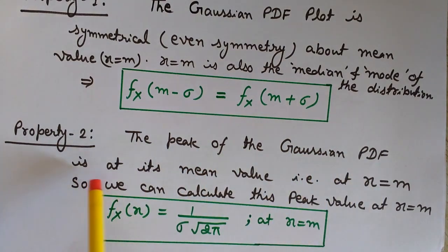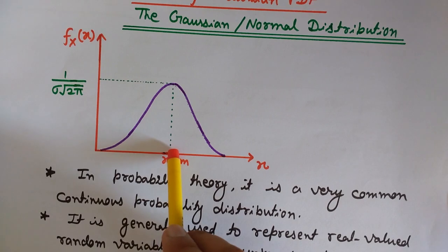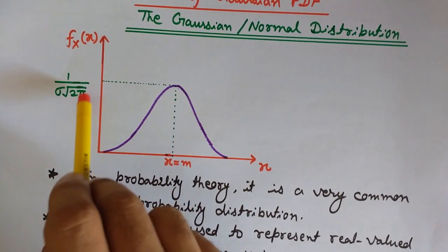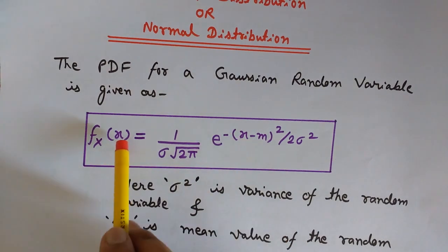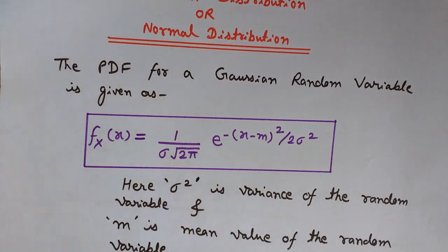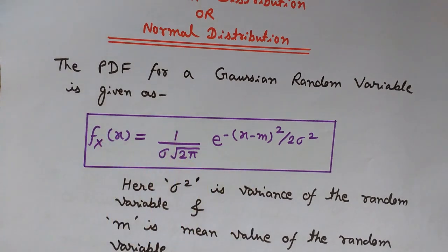Property number two: the peak of the Gaussian PDF is at its mean value, x equals to m. We can calculate this peak value: if you put x equals to m in the equation, the exponent term becomes zero, and you get the peak value as 1 / (σ √(2π)). This is the maximum value because the curve reaches its peak at x equals to m.